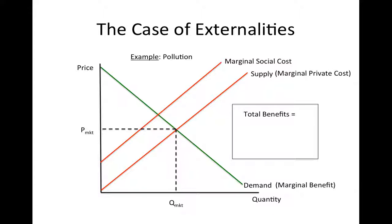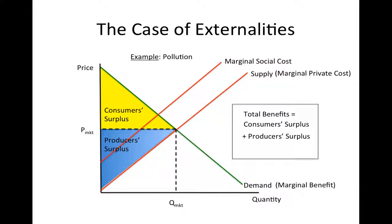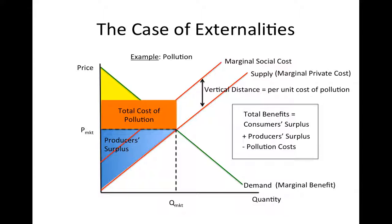To find the total benefits from this market outcome, as before, we add the consumers' and producers' surplus. However, because everyone who suffers from the pollution bears a cost from it, we have to subtract the cost of pollution as well to find the total benefits to everyone in the market. The total cost of pollution will be the total quantity of pollution produced, which is proportional to the market output, multiplied by the per unit cost of pollution, which is the vertical distance between the supply curve and the marginal social cost curve. As a result of the externality, total benefits are reduced, and the market outcome is inefficient.